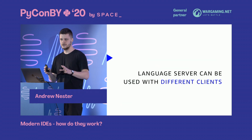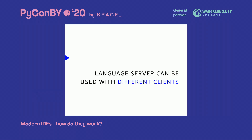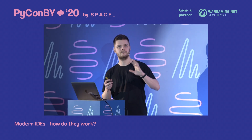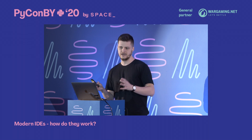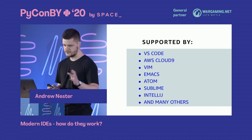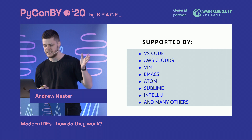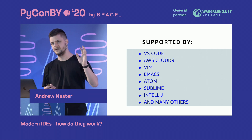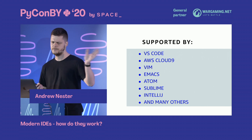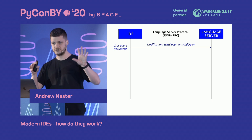Language servers are client-agnostic: the server exposes an API and any IDE can use it — VS Code, Cloud9, Vim, and pretty much anything else. Similarly, an IDE can use multiple language servers. If you want language features for five languages, you just install five language servers and connect them. LSP is now supported by most major IDEs: VS Code, Cloud9, Vim, Emacs, Atom, Sublime, and IntelliJ/PyCharm via plugins.